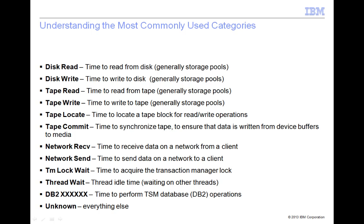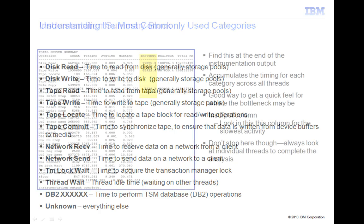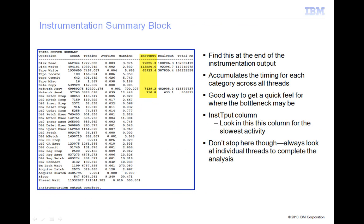Category names that start with DB2 are measuring TSM database activity. Significant values in any of these categories indicate a problem with the TSM database. Near the end of the server instrumentation output is a summary block of data. This data is useful to get an overall view of the performance of the various categories across all threads and during the entire measurement interval.